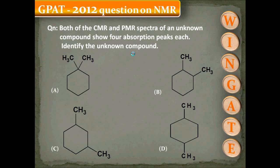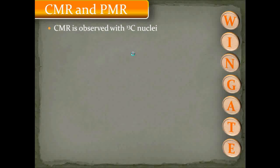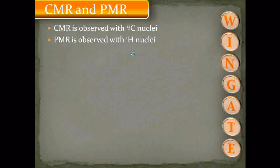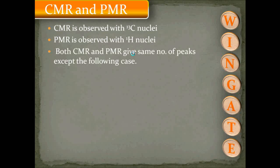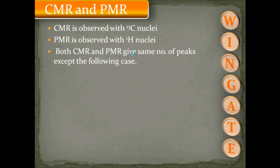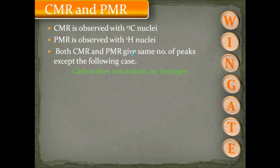CMR is observed with 13C carbon nuclei and PMR is observed with 1H or proton nuclei. So let us assume that all the carbons in the given molecules are 13C carbons. Both CMR and PMR give the same number of peaks in most cases, except when the carbon does not contain any hydrogen.